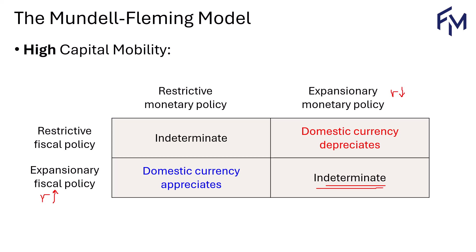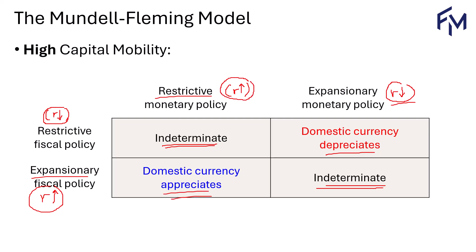If both are restrictive, restrictive monetary policy produces higher interest rates while restrictive fiscal policy produces lower interest rates. Again, the results are opposite, so it cancels out — the exchange rate outcome is indeterminate. If you have expansionary monetary policy where rates drop and restrictive fiscal policy where rates drop as well, the conclusion is clear: the domestic currency depreciates, because investors shift capital to countries paying higher yields. If you have restrictive monetary policy and expansionary fiscal policy, rates go up, you see an inflow of capital, and the domestic currency appreciates.